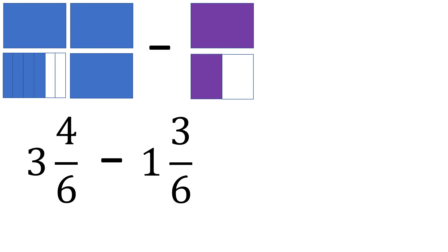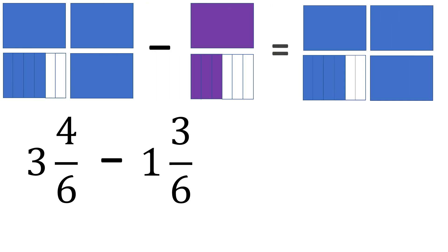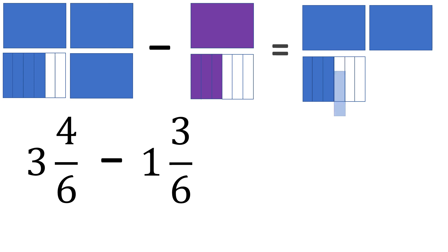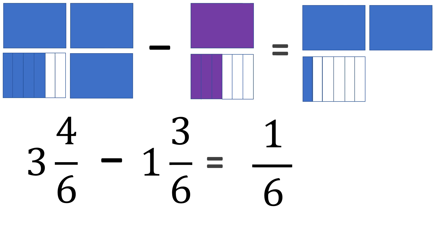For 1 half, since it is multiplied by 3, each part will be divided by 3 in the figure. Now the figures are fit to solve — we can remove 1 and 3 sixths from 3 and 4 sixths. Copy the denominator 6, subtract the numerators: 4 minus 3 is 1, and subtract the whole numbers: 3 minus 1 is 2. So the answer is 2 and 1 sixth.